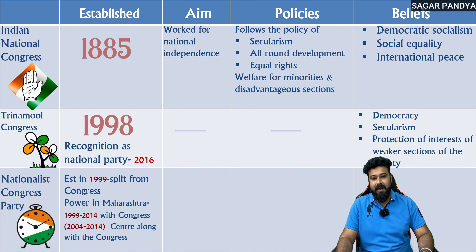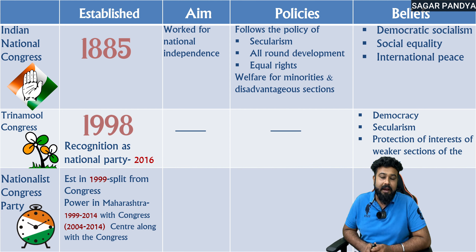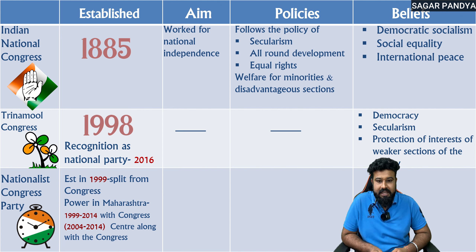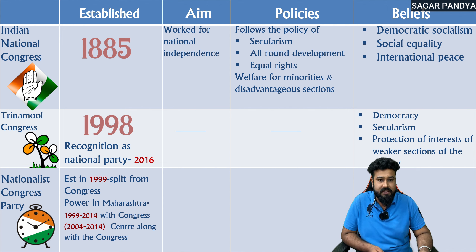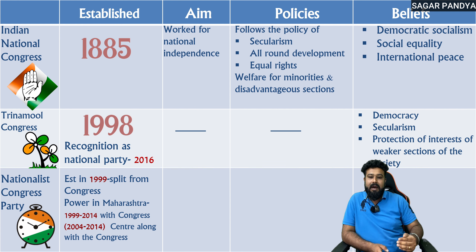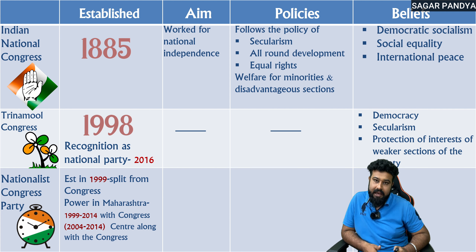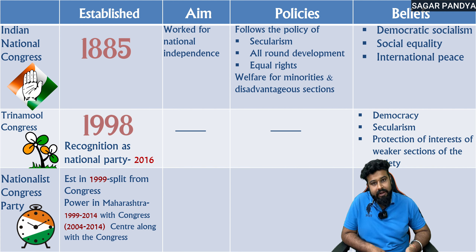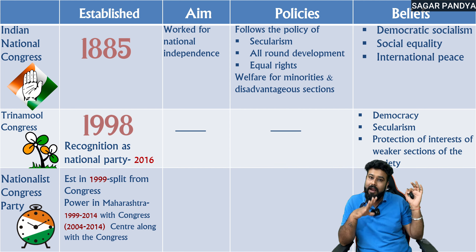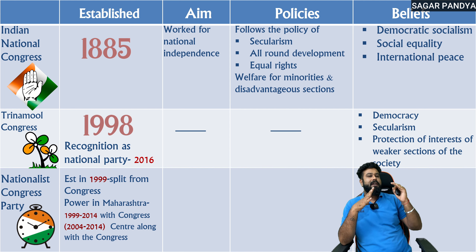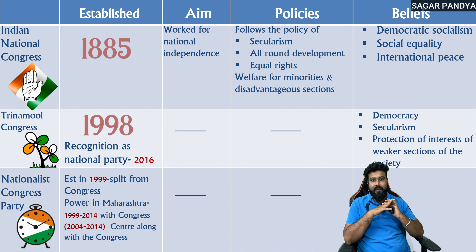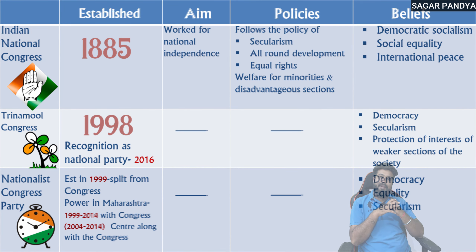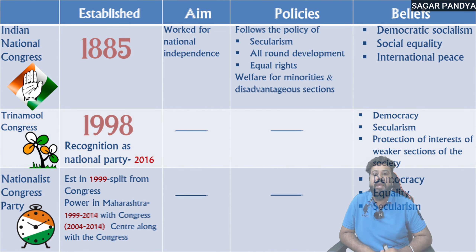The Nationalist Congress Party was established in 1999 by Sharad Pawar, after splitting from the Indian National Congress. It has power in Maharashtra, and from 1999 to 2014 it supported Congress at the national level as part of the coalition government from 2004 to 2014. Their main beliefs are democracy, equality, and secularism.